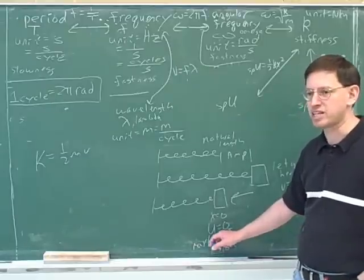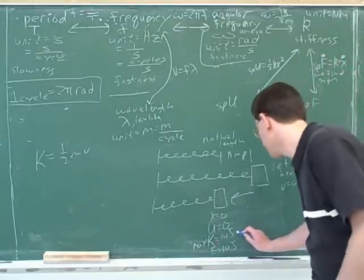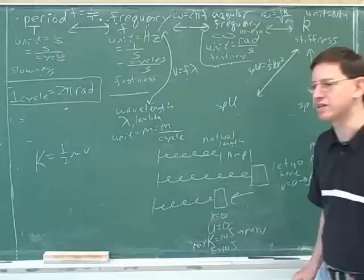Yeah. If K is at a maximum, one half mv squared, V must be at a maximum. So this is where we also have the maximum speed.